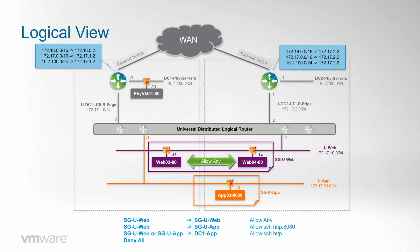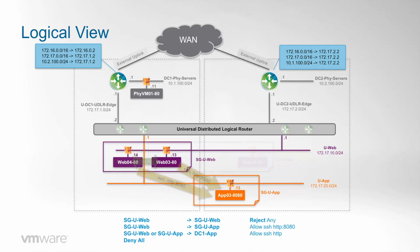We will allow anything between web servers, we will allow only SSH and HTTP on port 8080 from web servers to app servers, and there is also another rule that will allow SSH and HTTP from these web and app servers to the app servers on data center one. The last rule will be a denial so that we ensure that only the specified protocols are allowed. We will first check that policies are enforced as expected and then we will migrate web04 from data center two to data center one to see that security keeps being applied at all times.